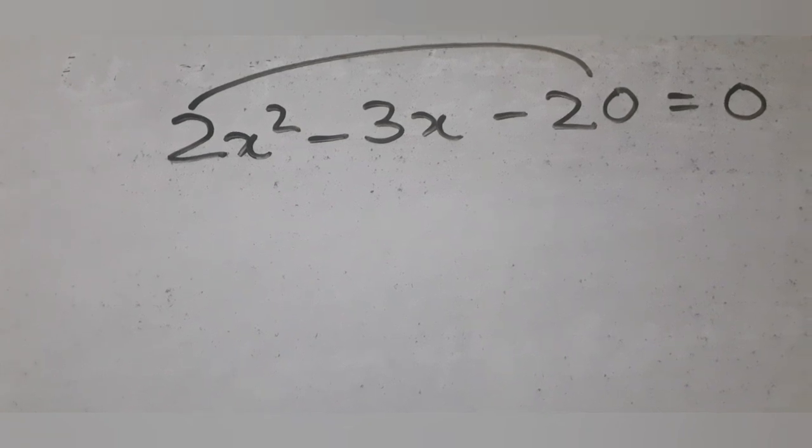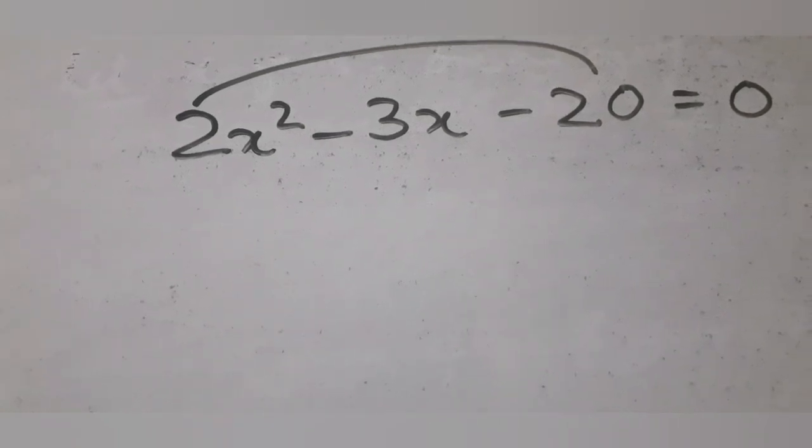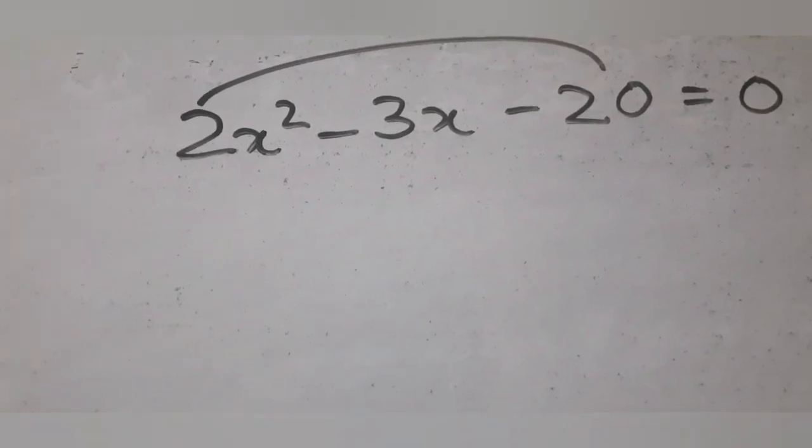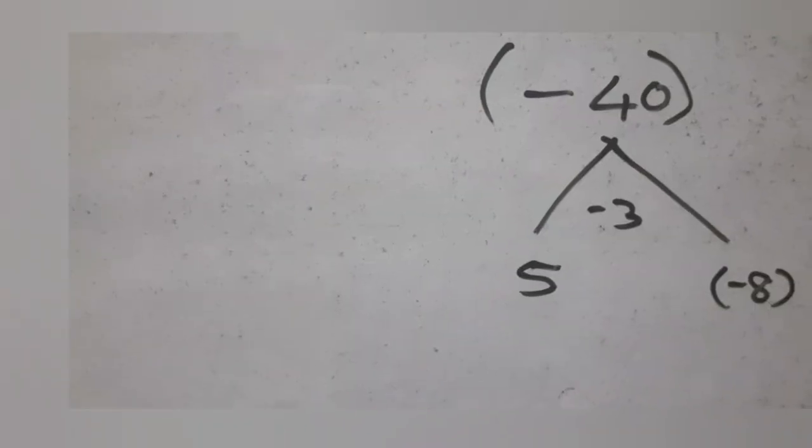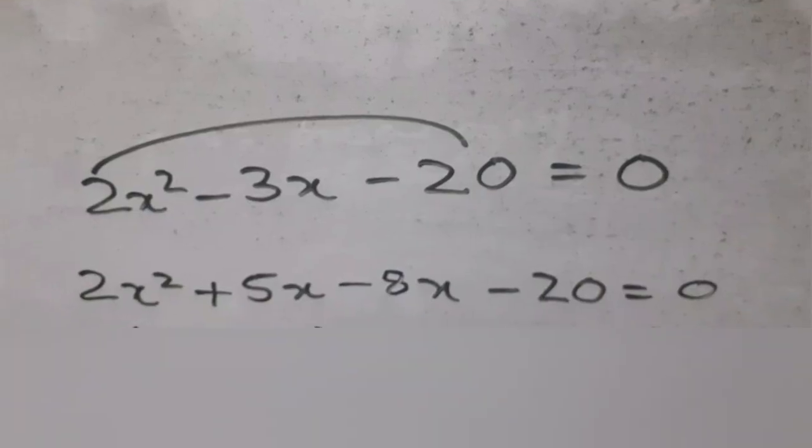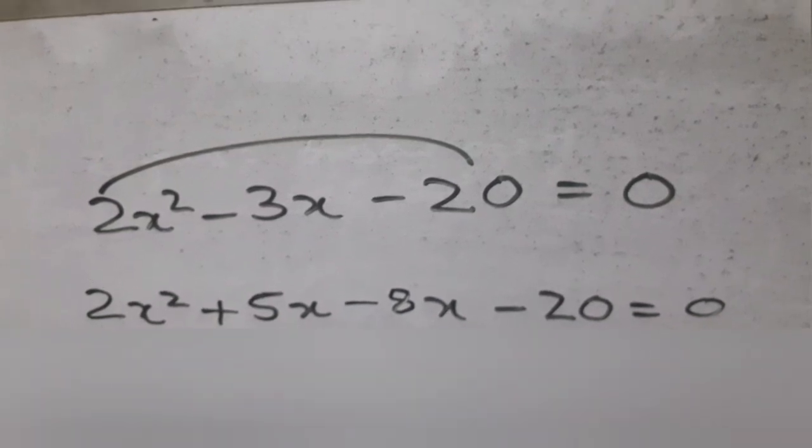We factor the equation. We need two numbers whose product is 2 into minus 20, that is minus 40, and sum is minus 3. The numbers are 5 and minus 8. Split the middle term as 5x minus 8x.